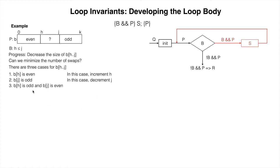B sub H is odd and B sub J is even. Neither of the above cases applies. In this case, swap B sub H and B sub J, which puts an even value in B sub H and an odd value in B sub J. Finally, increase H and decrease J.